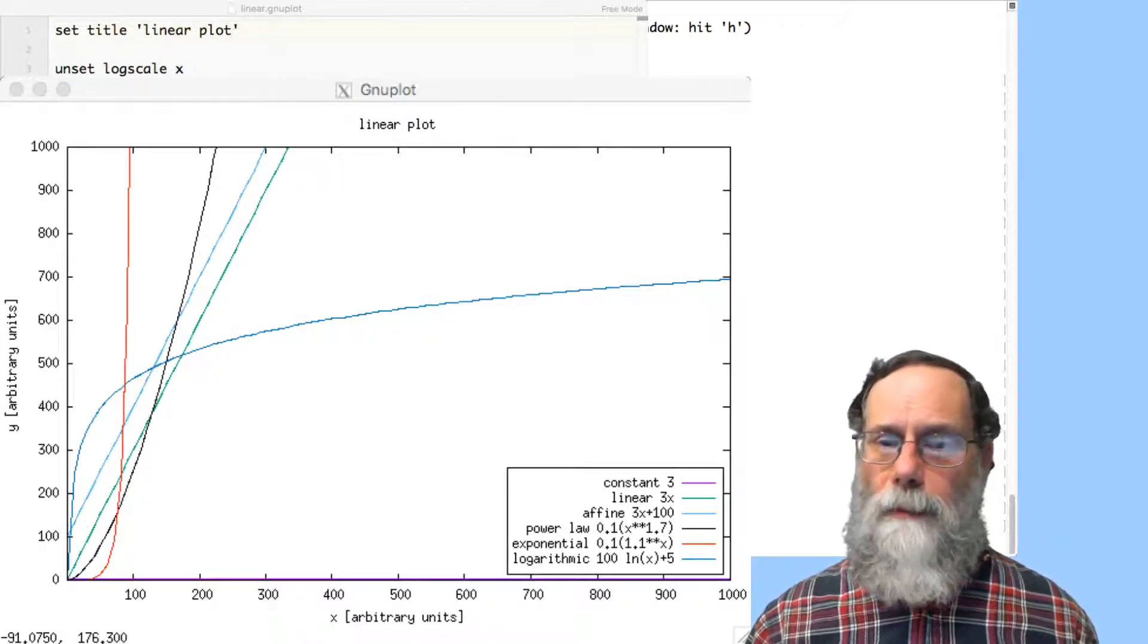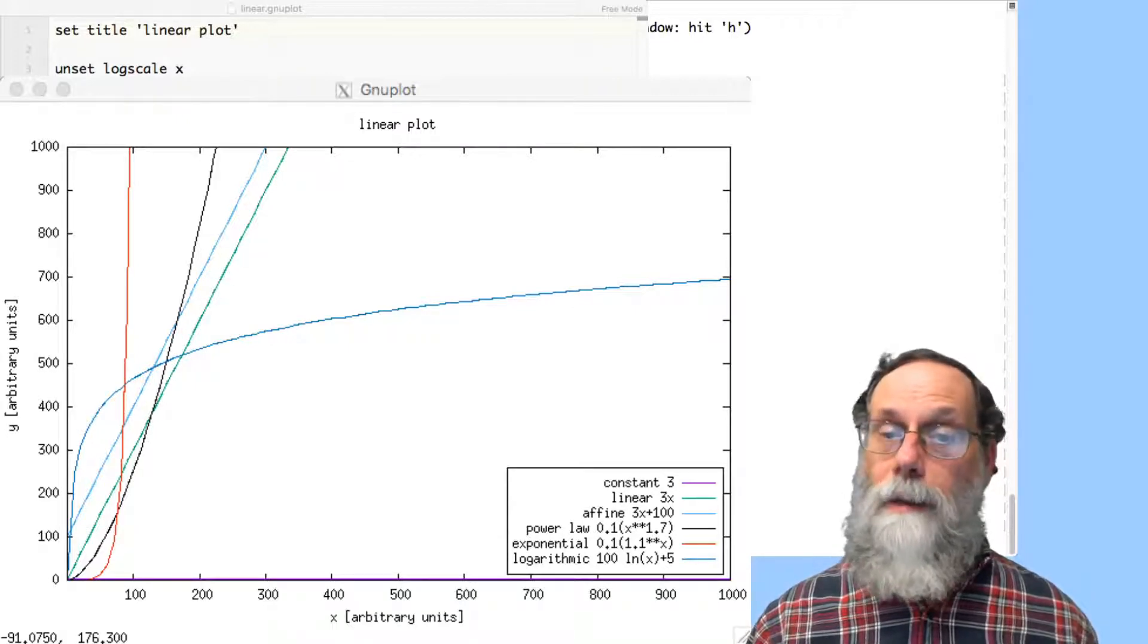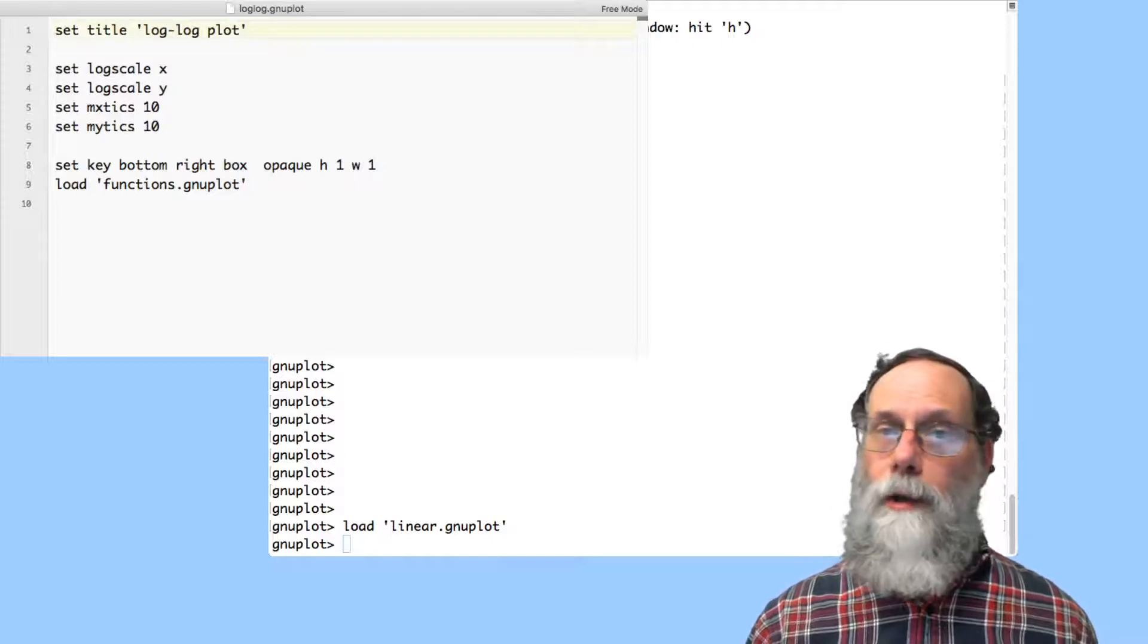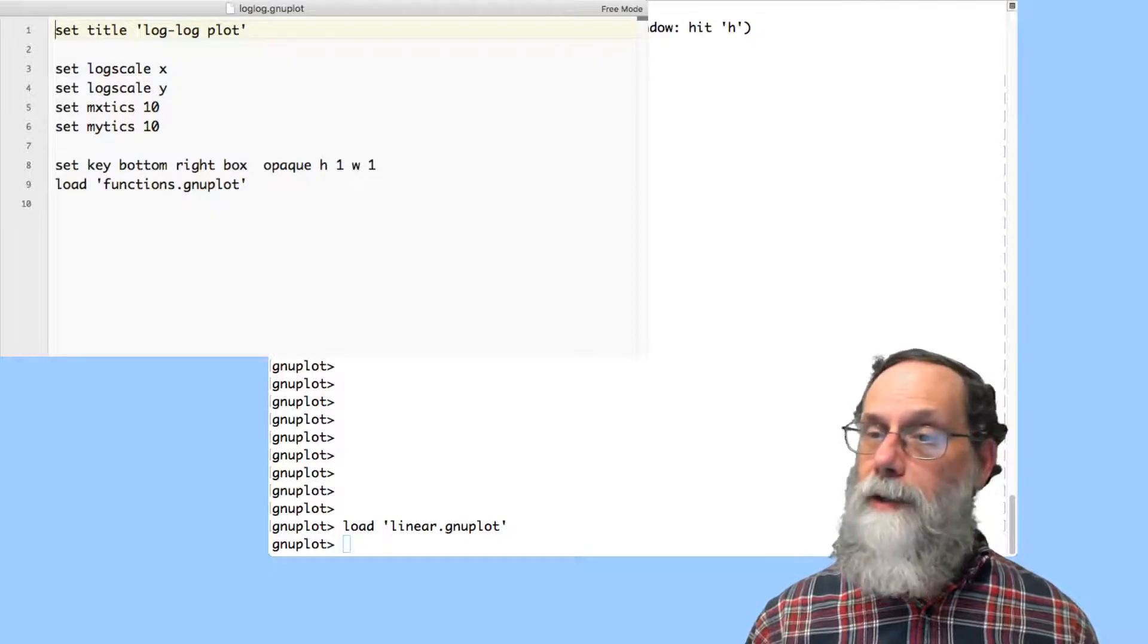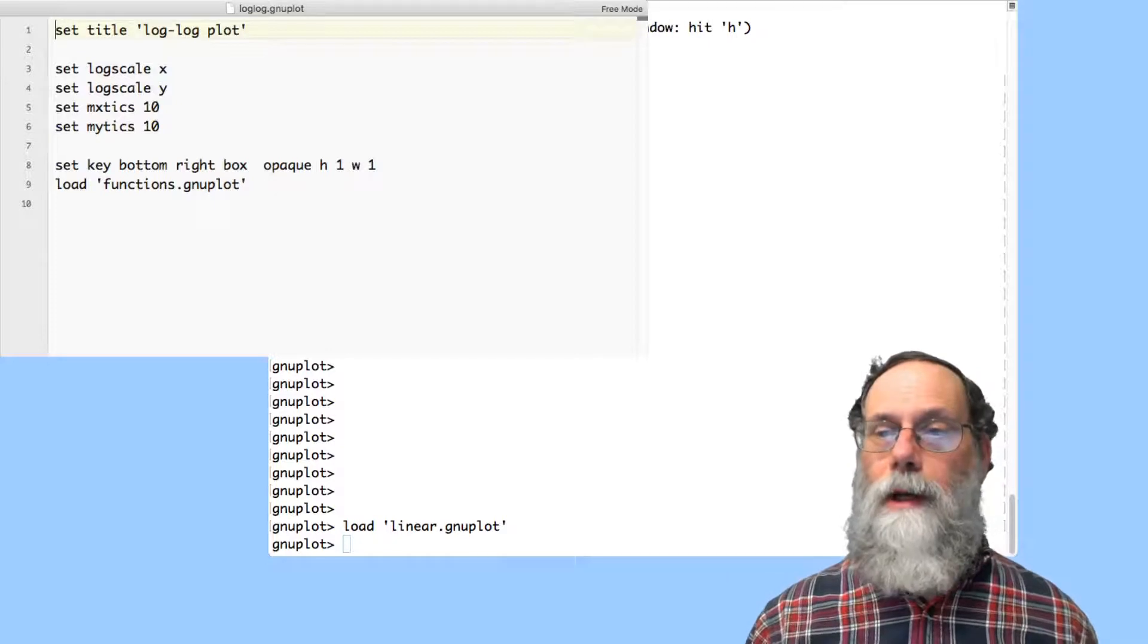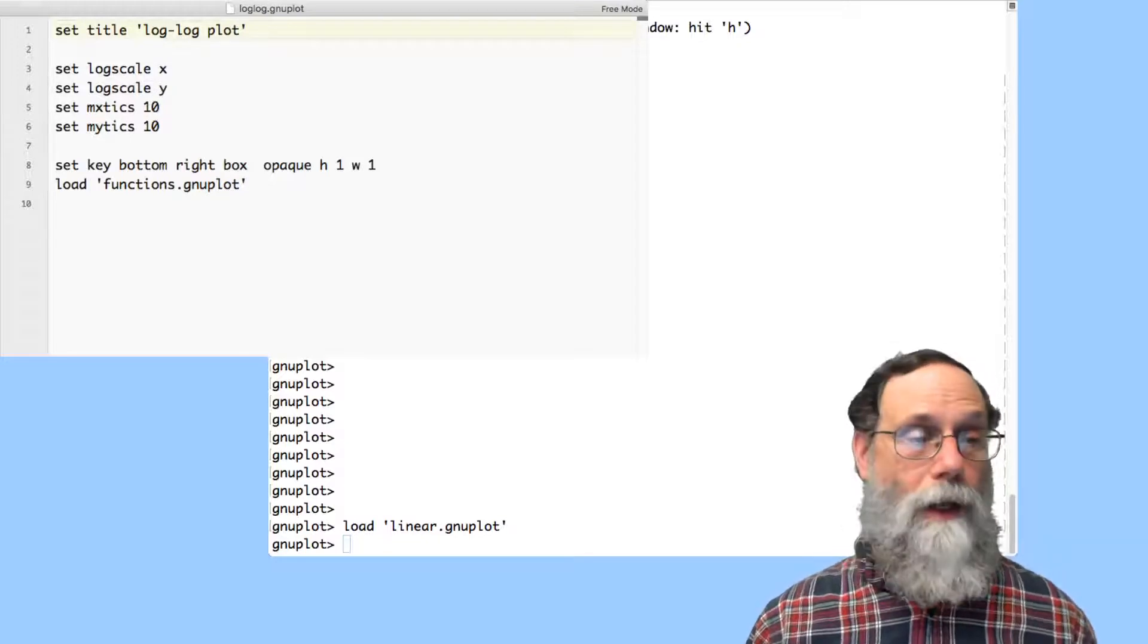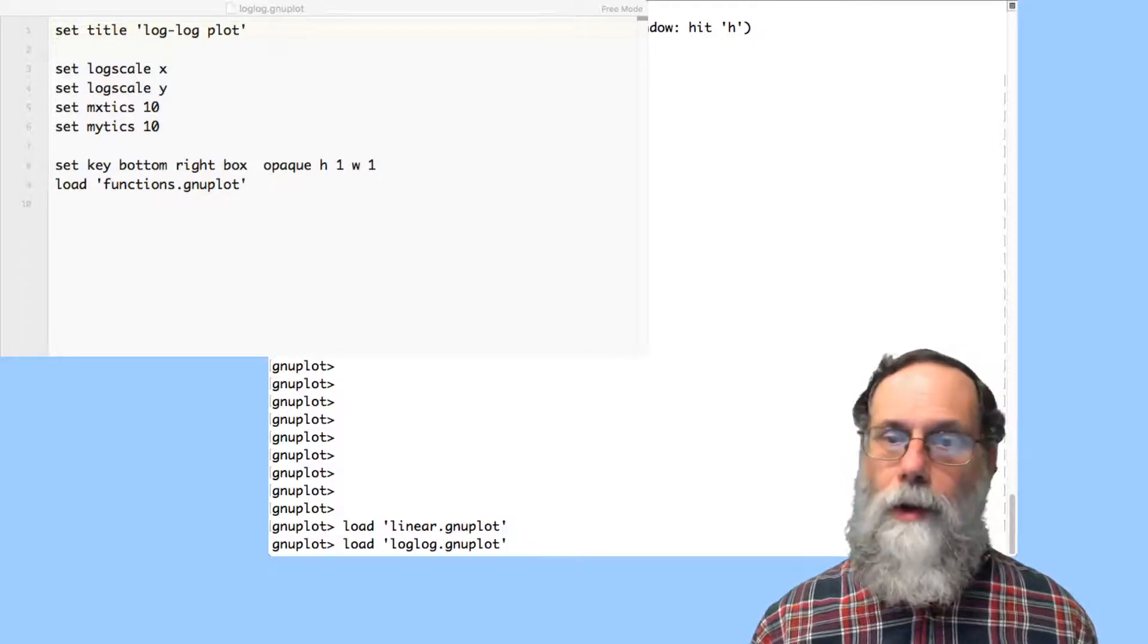So let's now hide that plot and take a look at a different sort of plot. What happens if we go back here and say let's, instead of the linear plot, do a log log plot. Here we're going to set log scale for both x and y. We're going to set 10 minor x ticks, 10 minor y ticks, just so we get the usual sort of appearance to the logarithmic scale where it marks 1, 2, 3, 4, 5, 6, 7, 8, 9, then 10, 20, 30, 40, 50, 60, 70, and so on. So let's look at that, the log log plot.